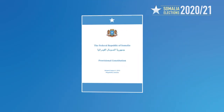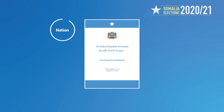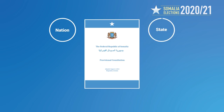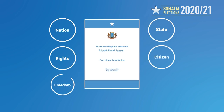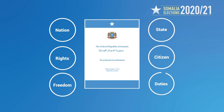Somalia's provisional federal constitution of 2012 is the fundamental law of the nation and state. As a social contract, the constitution governs our life. It lays down the rules and principles that guide the organization and operation of the state.